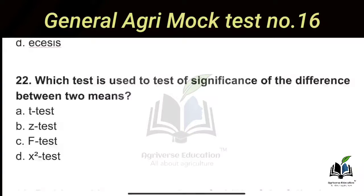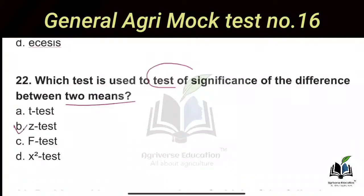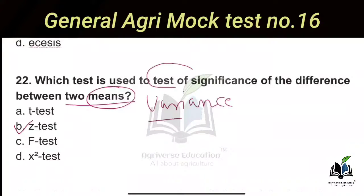The next question: Which test is used to test the significance of the difference between two means? The right answer is the t-test. Note that if the question asked about variance instead of means, the answer would change to the F-test. So: t-test is for means, and F-test is for variance.